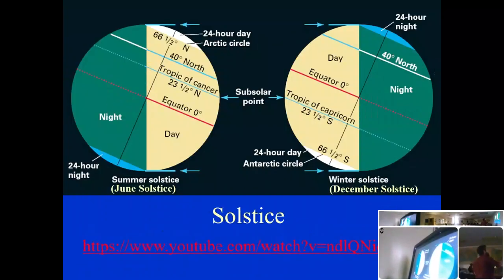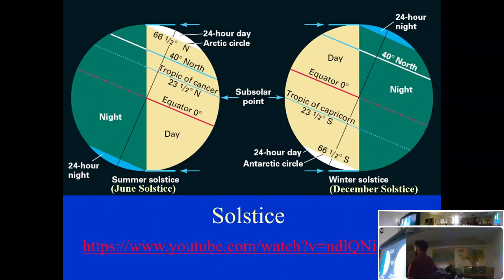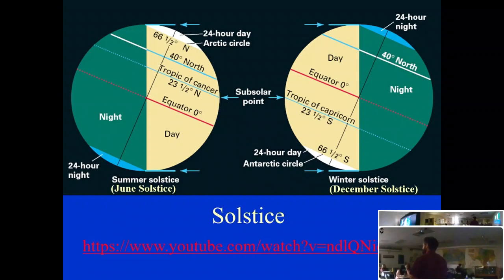During Southern Hemisphere summer, the sun is directly overhead the Tropic of Capricorn. The Arctic and Antarctic circles at 66.5 degrees — which is 90 minus 23.5, the tilt of the axis — mark the points beyond which you get at least one day with no sunshine in winter, and in summer at least one day where the sun never sets. At the poles themselves, you get six months of continuous sunlight and six months of night.